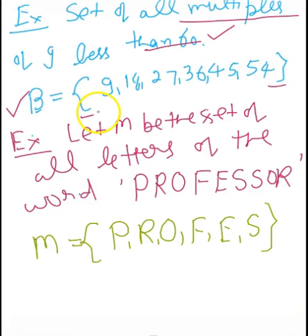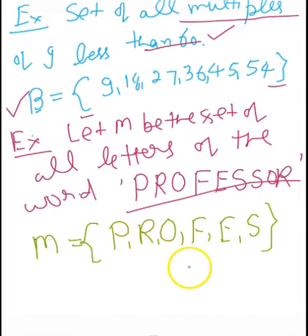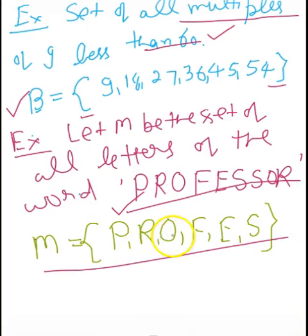Let's take another example. Let set M be the set of all the letters of the word 'professor.' You can see that S, O, and R are repeated. When we rewrite this set in roster form, we do not repeat elements — we write each repeated element only once. So the roster form is: {p, r, o, f, e, s} — all the distinct elements of 'professor.'